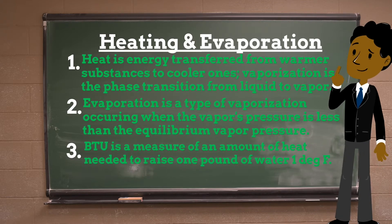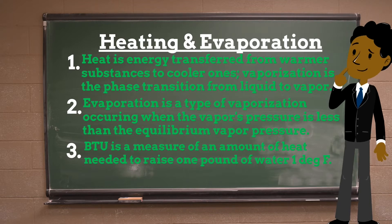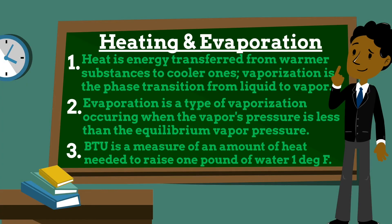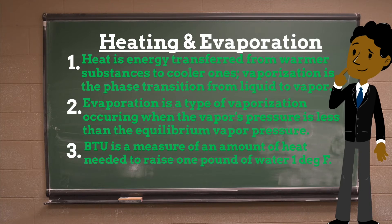A British thermal unit, commonly called BTU, is a measure of an amount of heat and is defined as the amount of heat needed to raise one pound of water one degree Fahrenheit. At the boiling point of water, which is 212 degrees Fahrenheit, it takes 970.3 BTU per pound to change one pound of water to one pound of steam. This is also called the latent heat of vaporization.